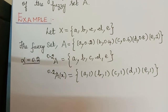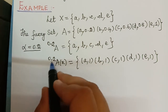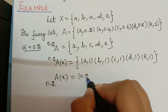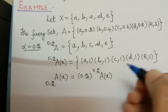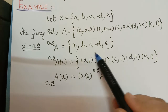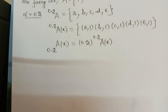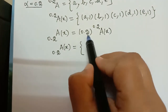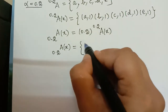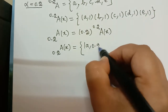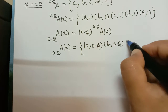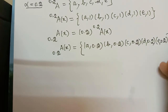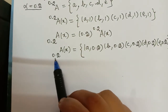Now we evaluate the special fuzzy set alpha_A(x) for alpha = 0.2. It equals 0.2 multiplied by the special membership function values. Multiplying 0.2 by 1 for each element gives: 0.2_A(x) = {(A, 0.2), (B, 0.2), (C, 0.2), (D, 0.2), (E, 0.2)}. This is the special fuzzy set with respect to alpha = 0.2.